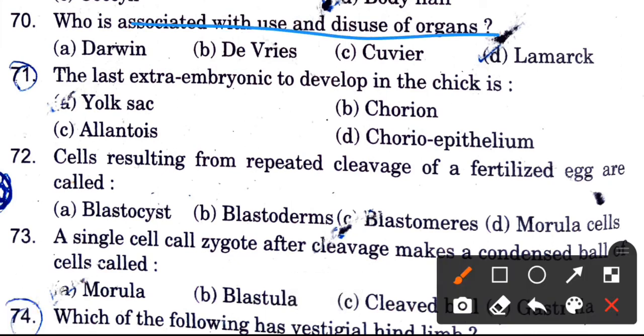Who is associated with use and disuse of organs? Options are Darwin, de Vries, Cuvier, and Lamarck. The answer is Lamarck.